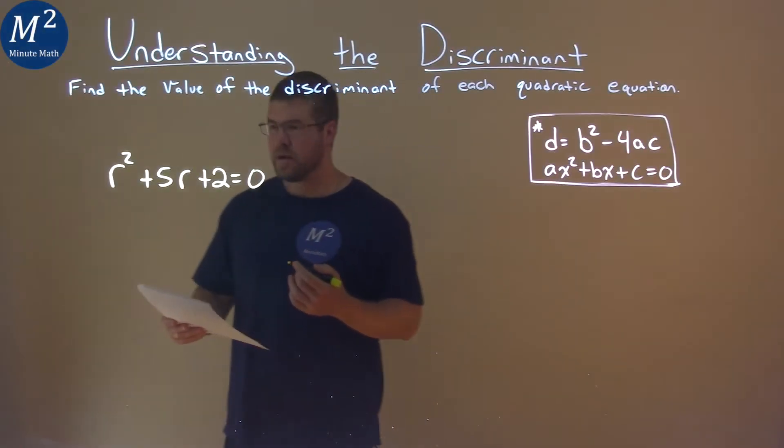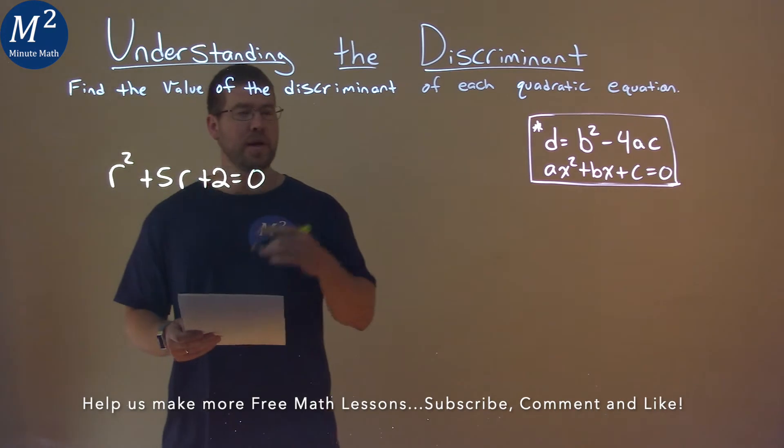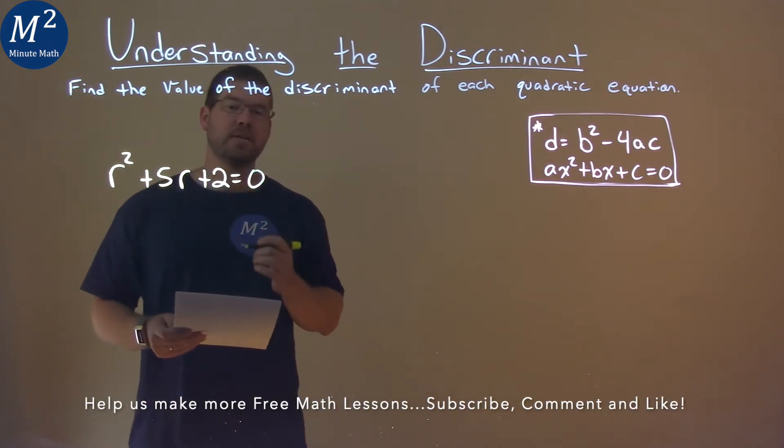We're given this problem right here, r squared plus 5r plus 2 equals 0, and we need to find the discriminant.